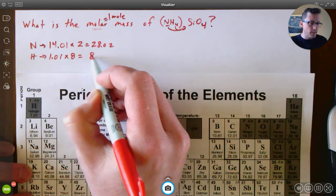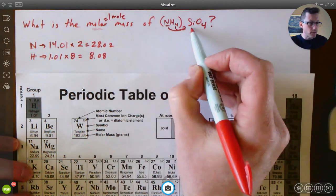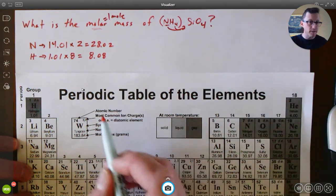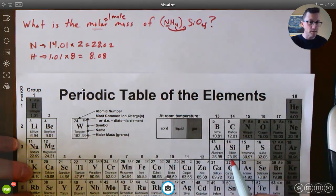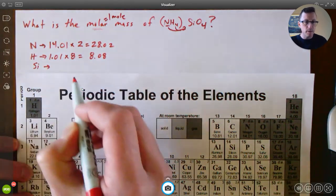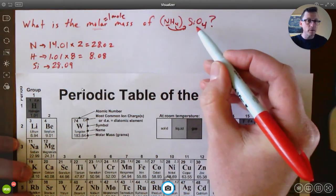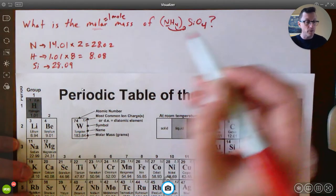Okay, what else we got? I have Si's. So find Si - it's number 14, silicon, right here. Si has a weight of 28.09, and according to my formula, there's no subscript here, so I only have one of them. So 28.09.